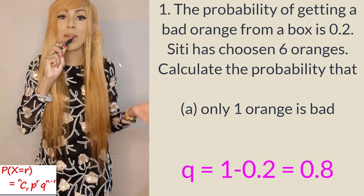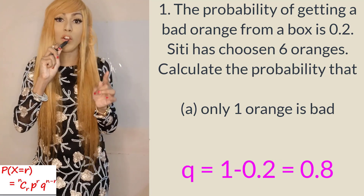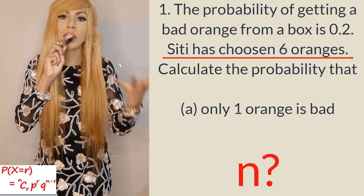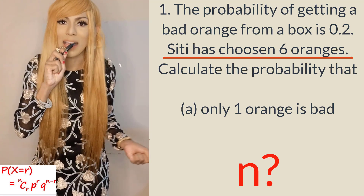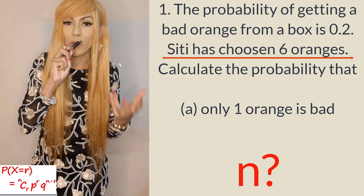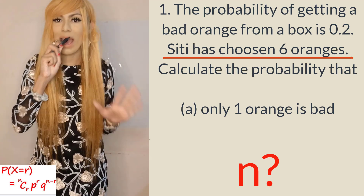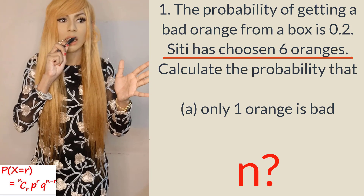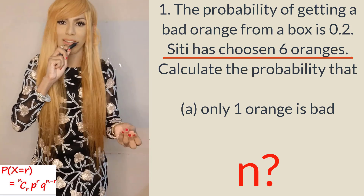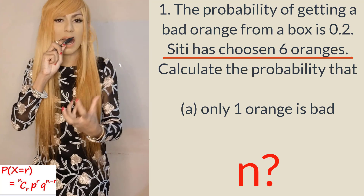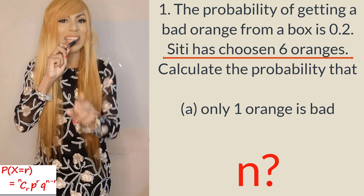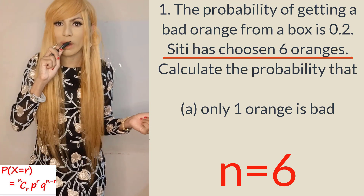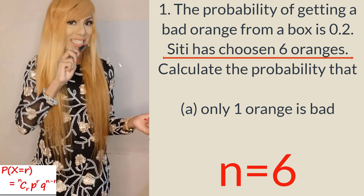Q is just 1 minus P, so 1 minus 0.2 is 0.8. And N is the total number of trials. For example, if you have 10 exam questions, N is 10; if you shoot a bird 9 times, N is 9. N is the maximum number of attempts. In this case, N is 6, because we have 6 oranges.